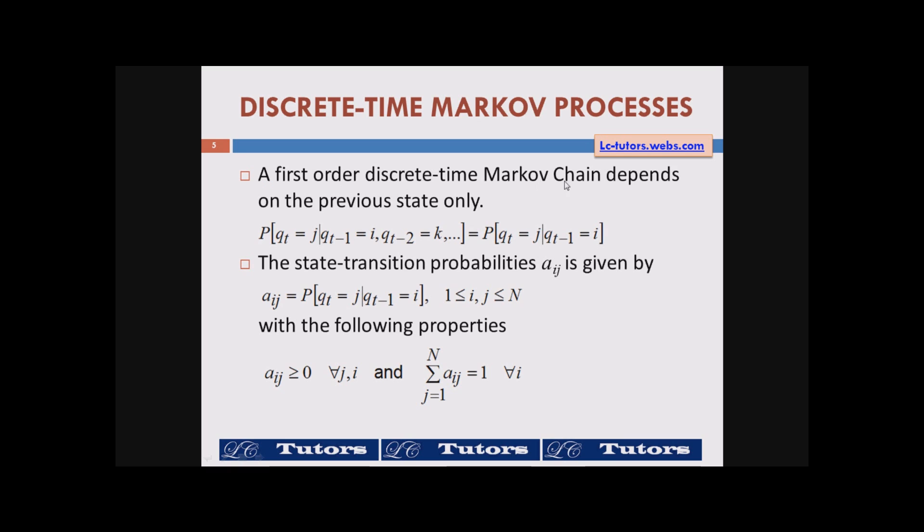A first order discrete time Markov chain depends on the previous state only, just only the previous state. If you take a probability qt of a state given qt minus 1, the previous state, comma qt minus 2, so on and so forth. But if it is a first order discrete time Markov chain then it will depend only on the previous state, that is qt minus 1, that means qt minus 2 can be dropped here. That means this statement can be reduced to probability of qt given qt minus 1. So we can also write P probability j given i. j is the current state, i is the previous state.